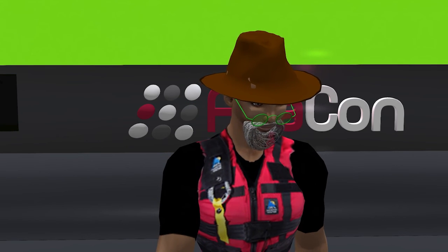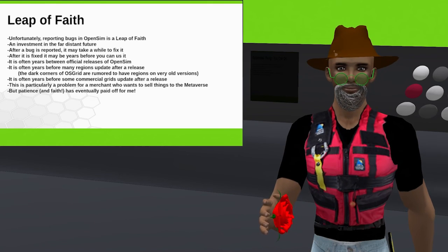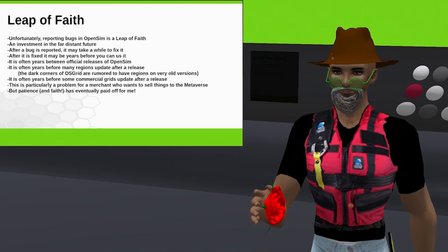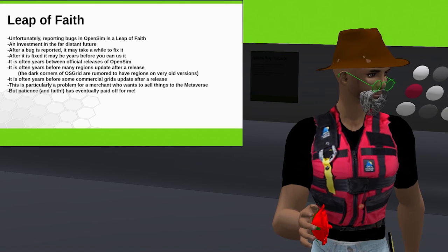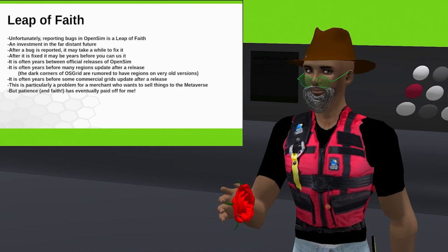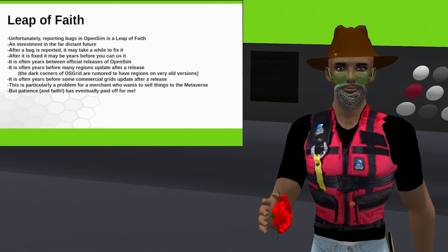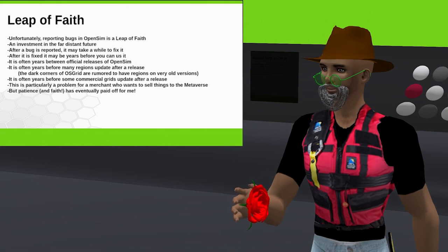Now I have a sort of sorry story to tell. Reporting bugs to OpenSim is kind of a leap of faith — it's an investment in the far distant future. After a bug is reported, it may take a while to fix it. After it is fixed, it's sometimes years before a new version of OpenSim is released, and then it's years before many people update their regions. OSGrid is full of regions with old versions of OpenSim still running on it. And then sometimes it's years before commercial grids update to a new release. Kitely has fortunately updated to 0.9 and I'm really happy to see that. Unfortunately, I'm a merchant in the Kitely marketplace, which means that if I find a bug tomorrow and submit it to the developers and they fix it, it's going to be a while before it percolates into all of the systems out there. It might be years before I could sell a product that uses a function that I had to report a bug in.